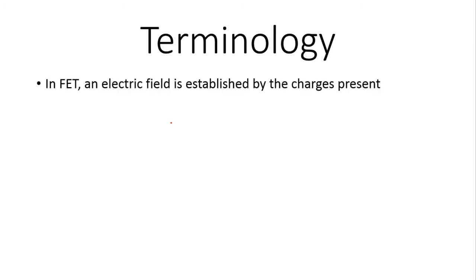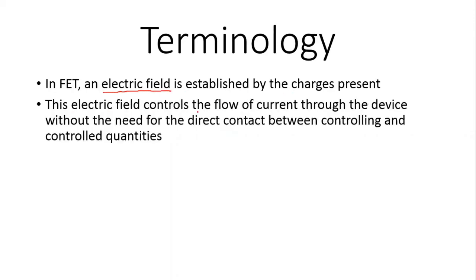Now let us talk about the terminology of FET. We know that the FET is a unipolar device and it will have charge — electrons or holes — present. These charges are going to create and establish an electric field, and this electric field is going to control the flow of current through the device without the need for direct contact between the controlling and controlled parameters.